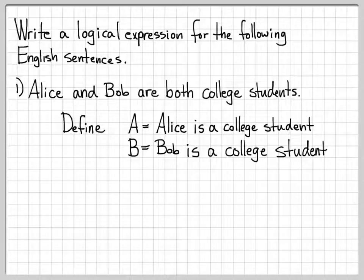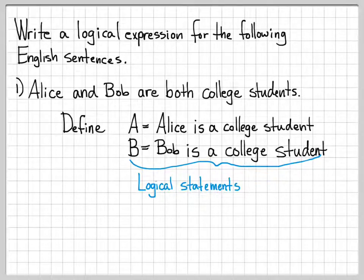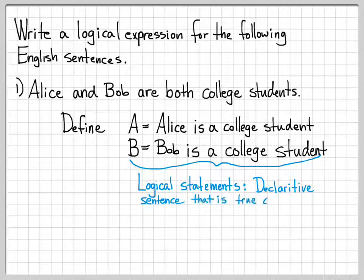If we just defined A equals Alice, that would not be correct because the statement 'Alice' isn't something that evaluates to true or false. Same thing for B equals Bob — 'Bob is a college student' is something that is either true or false; it's a logical statement. If we just defined B as Bob or Bob college student, that doesn't make sense. Make sure you write something out that evaluates to either a true or false statement.